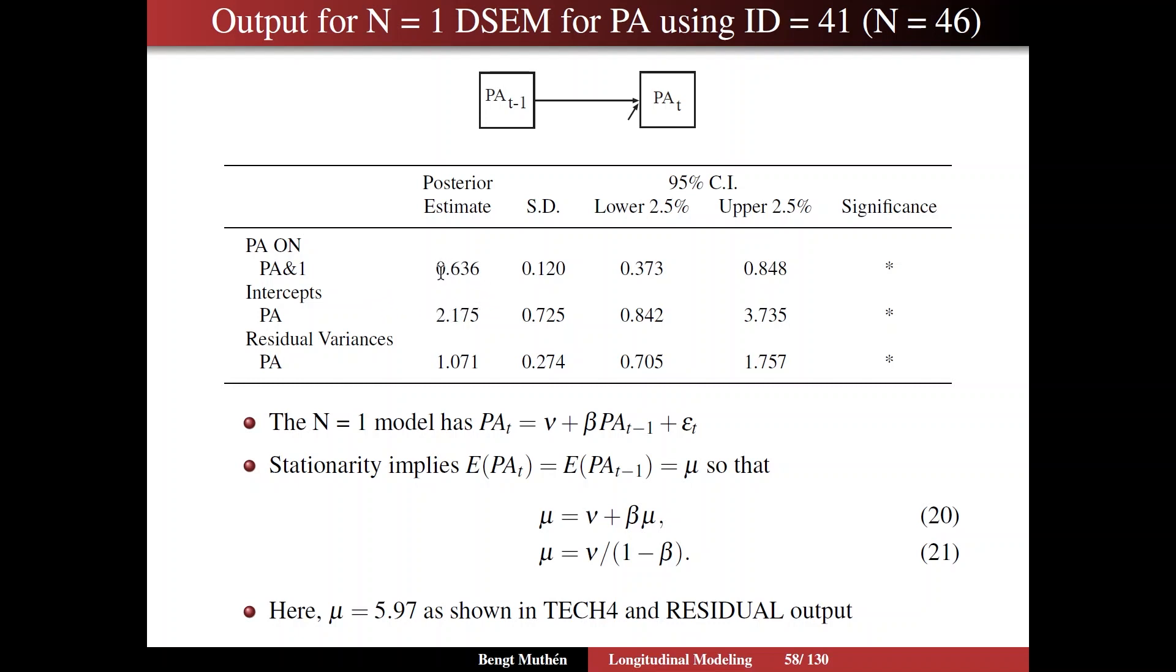In the regular output, we give only these three values, so you have to draw on your knowledge about stationarity. The N equals 1 model has this equation. There's no subscript i needed because we're looking at only one person. So the sample points are the different time points. We have an intercept, which we call nu, nu in Greek, plus the slope, and then a residual. Stationarity implies that the mean at time t is the same as the mean at time t minus 1. We can call that mu. Therefore, we have the equation that the mean of that is equal to the intercept plus beta times the mean of that, which is the same.